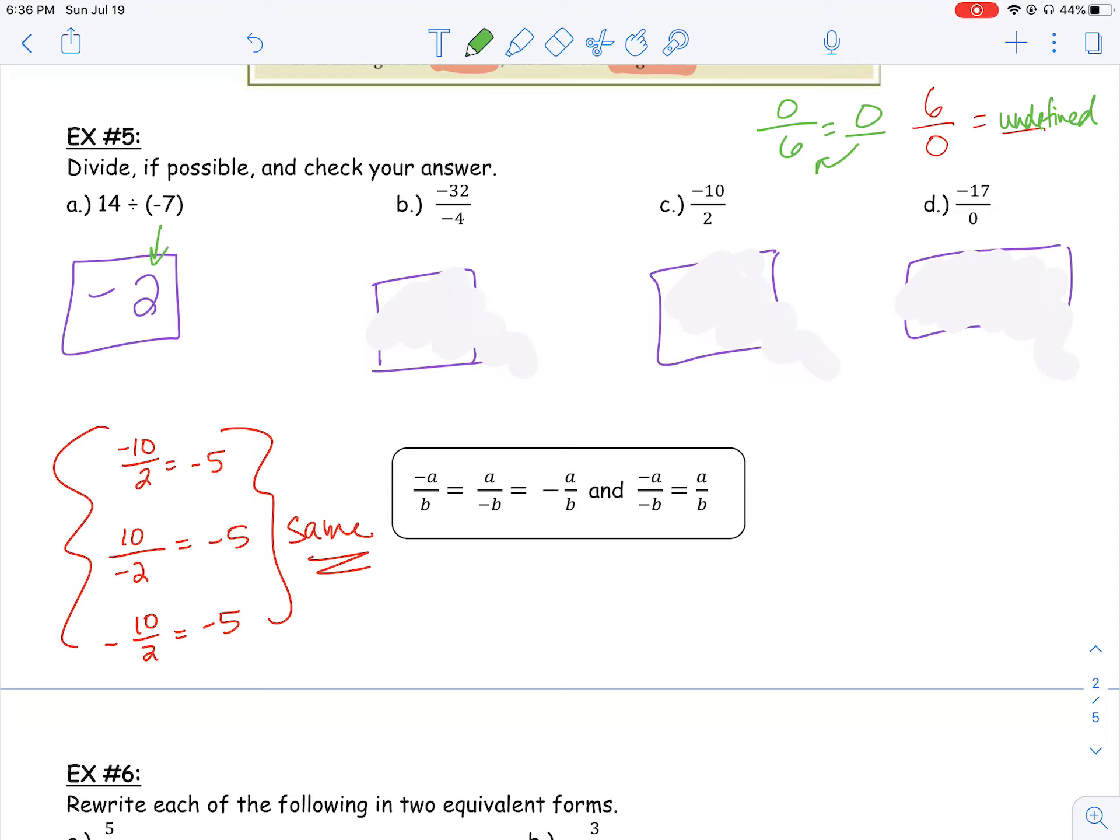Again, we can always double-check by taking these two values, multiplying them, and getting back the number that we started with, 14. Negative 7 times negative 2. Two negatives make me a positive, and I end up getting 14, which works and makes sense.